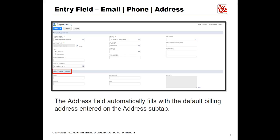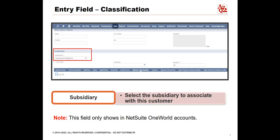Save a customer billing and shipping address because it will be used in the calculation of tax for some scenarios. Under Classification in the Subsidiary field, select a subsidiary to associate with this customer. You cannot enter transactions for this customer unless a subsidiary is assigned. This field only shows in NetSuite OneWorld accounts. If you select this customer on a transaction, the transaction is associated with this subsidiary, and the customer is able to access only information associated with this subsidiary. Note: as soon as a transaction has posted for the customer, you are not able to change the subsidiary selected on the customer record.